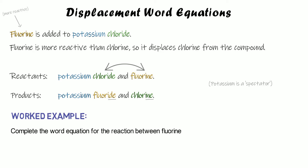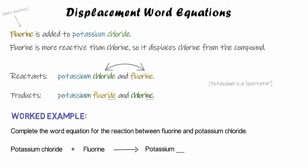A question could be: complete the word equation for the reaction between fluorine and potassium chloride. We start with potassium chloride and we add fluorine, then we produce potassium something and something. Because fluorine is more reactive than chlorine, it's going to displace the chlorine — they're going to swap over. So we get potassium fluoride and chlorine on its own. Fluorine becomes part of potassium fluoride and the chlorine is displaced and becomes chlorine on its own.